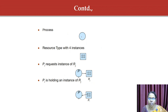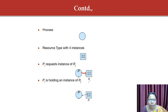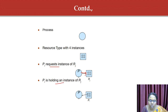A process is depicted as a circle. A resource type is represented as a rectangle — for example, one with four instances would show four dots inside it. When a process requests an instance of resource Rj, it is a request edge. If that instance is assigned and the resource is free, Ri is assigned to Pi — that is an assignment edge.